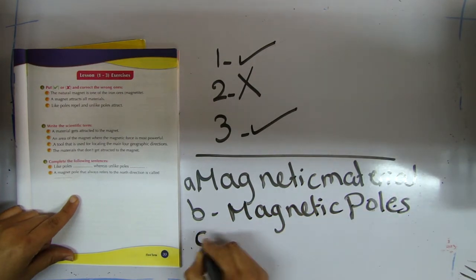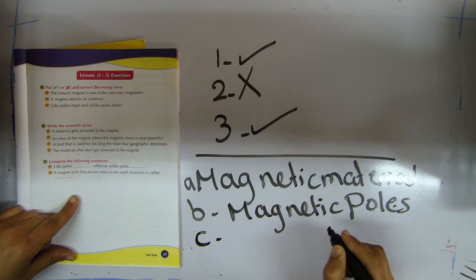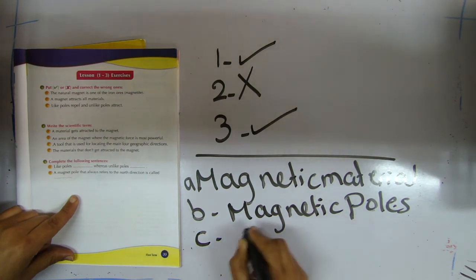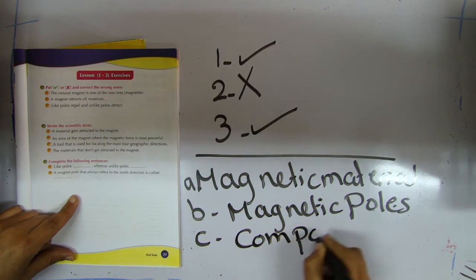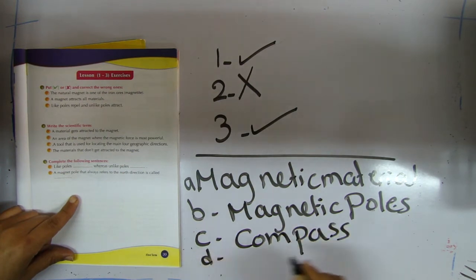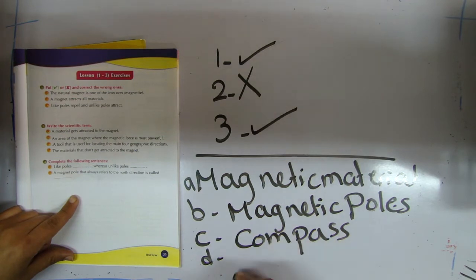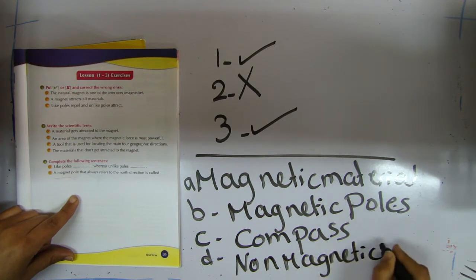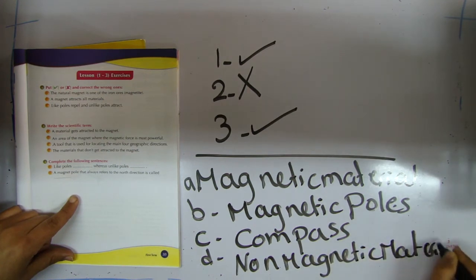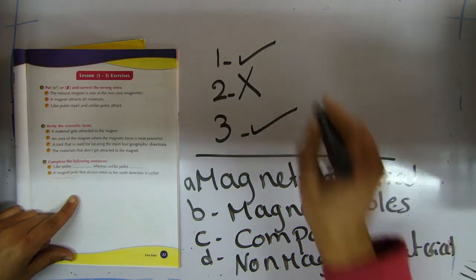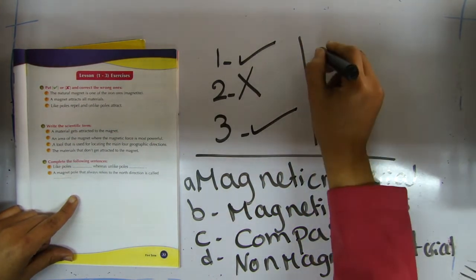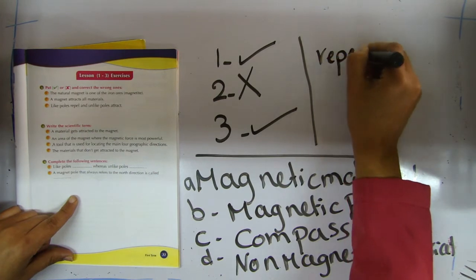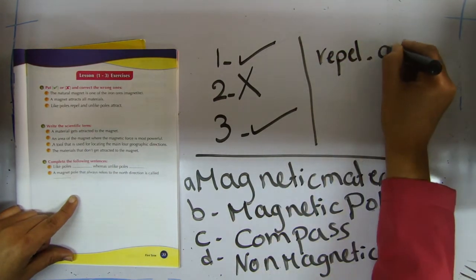Number three: a tool that is useful for locating the main geographical direction is the compass. Number four: the material that does not get attracted to the magnet is non-magnetic material. Question number three, complete: like poles repel, unlike poles attract.